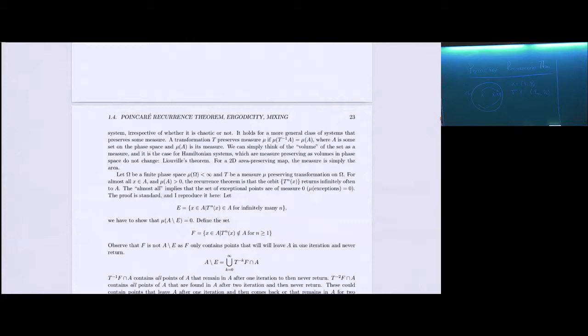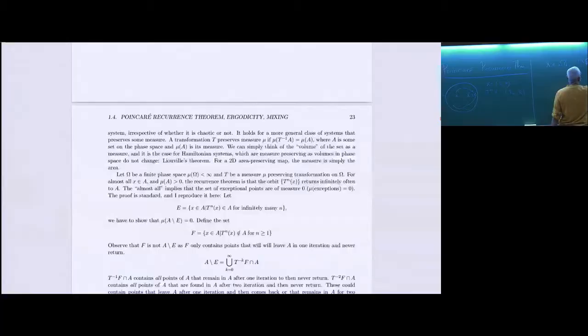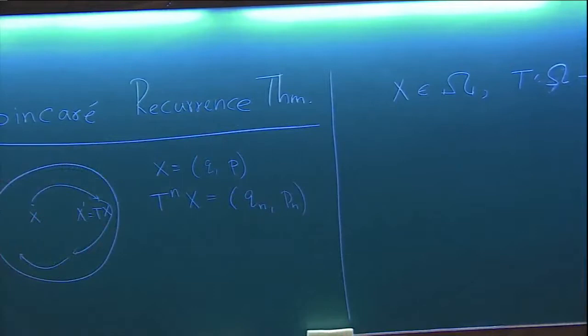The Poincaré Recurrence Theorem is stated in the following context. There is a point X that belongs to phase space Omega, and there is a transformation T which takes points from this phase space to itself — it maps Omega into itself. We can think about it a bit abstractly.